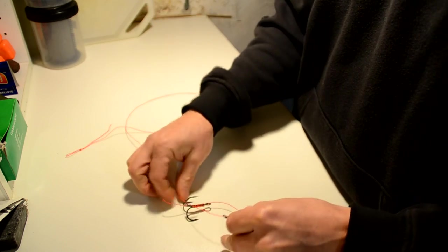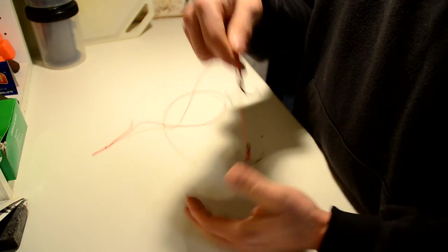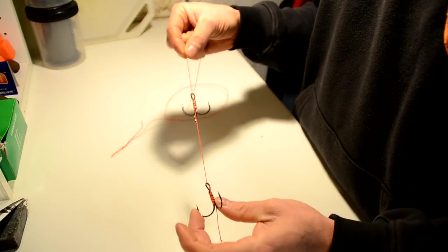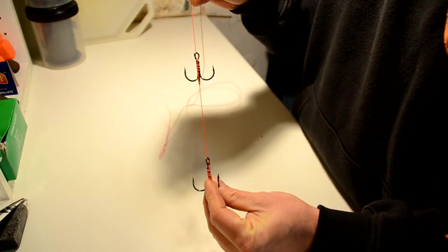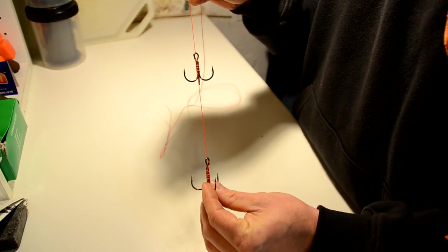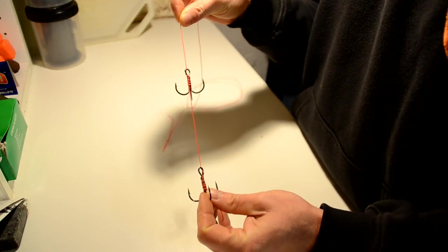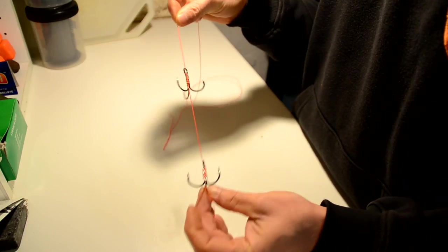There you have it, finished rig. You can tune that up with rattle beads, smile blades, and whatever you like. I hope you will take this into consideration next time you try to make a rig for live baits.